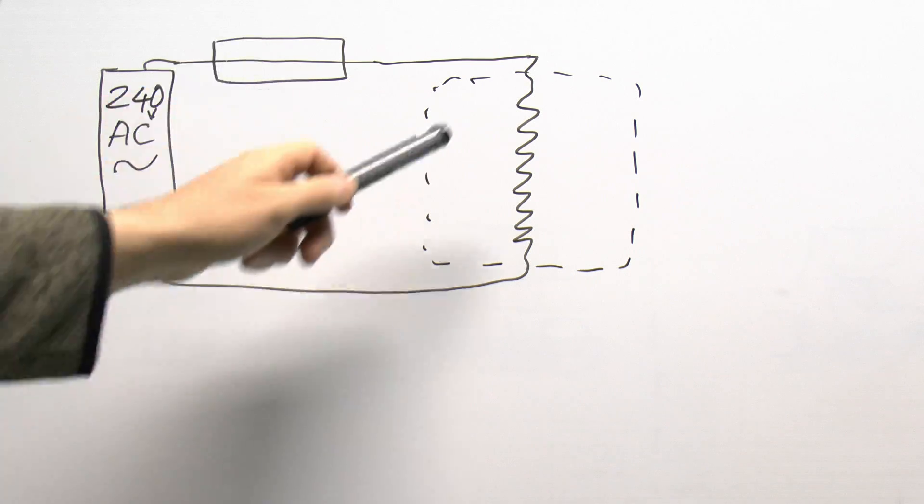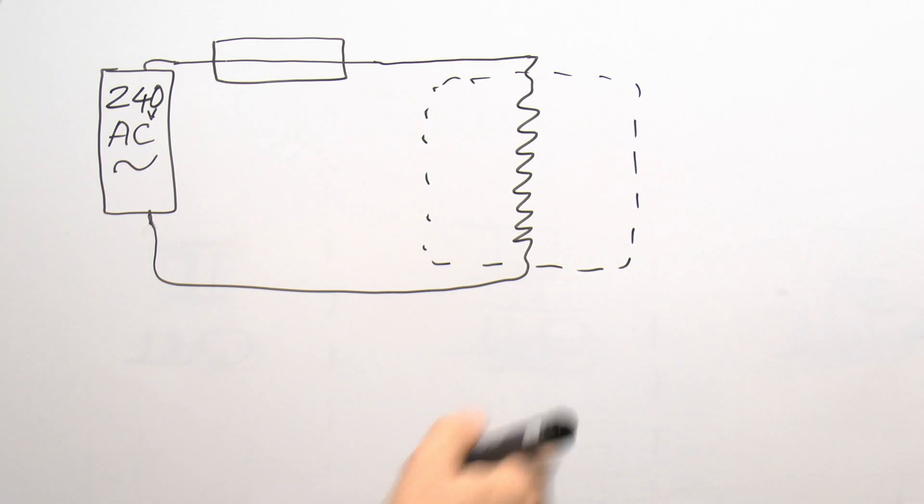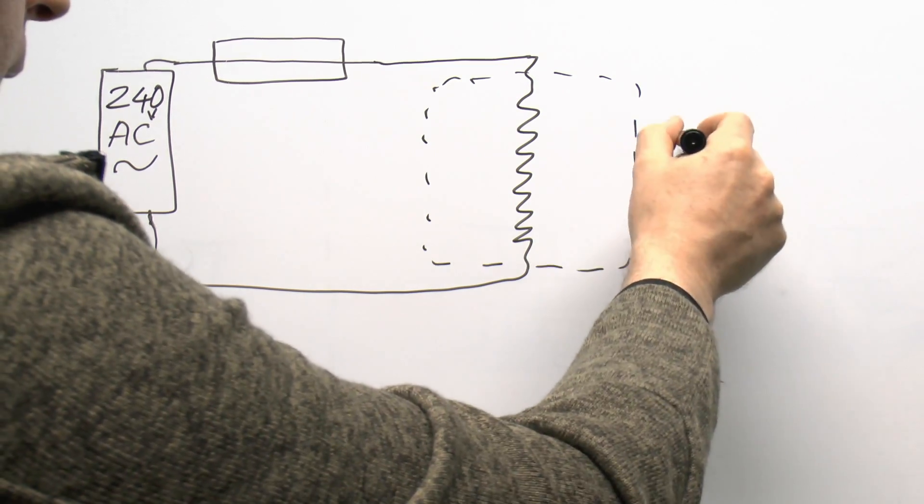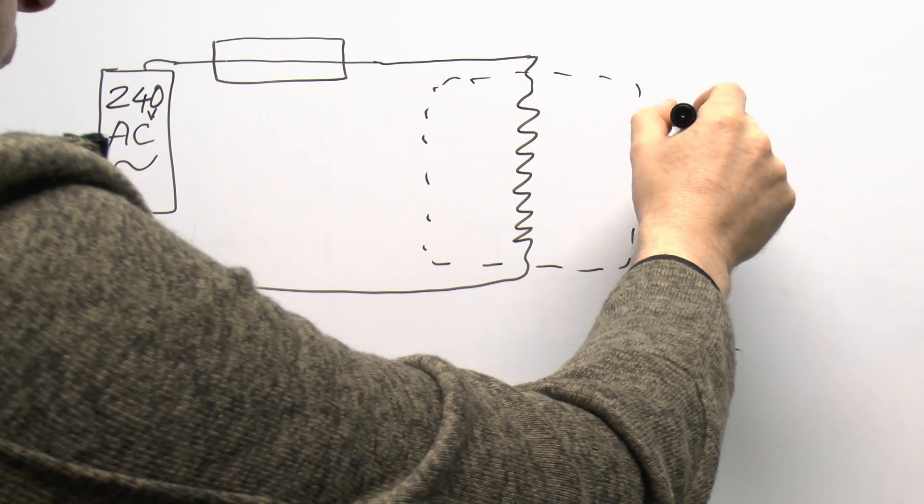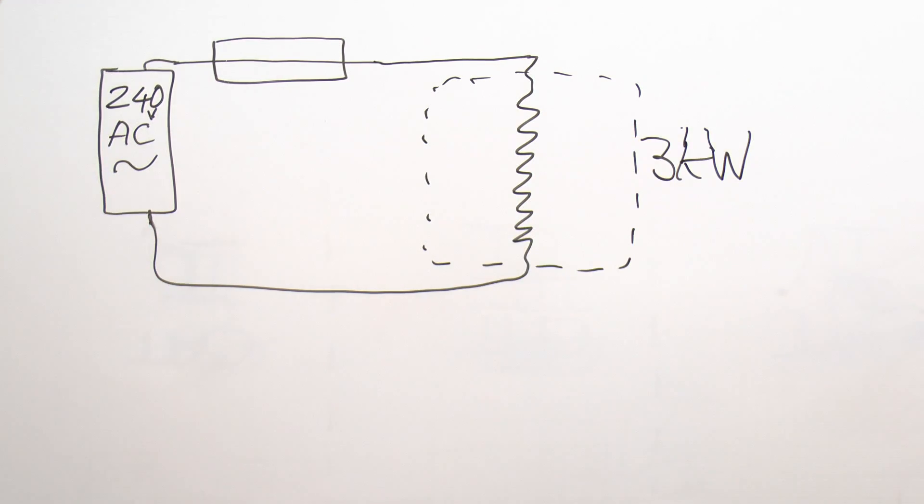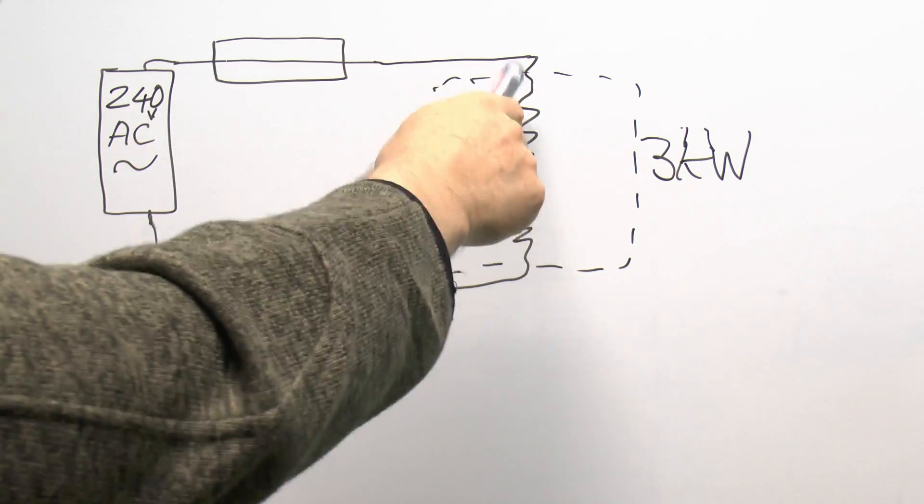So we've got the supply there, fuse and heating element. Let's say that was a three kilowatt electric fire. However, in this situation the current would still flow through the circuit.